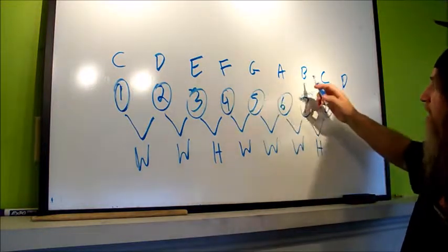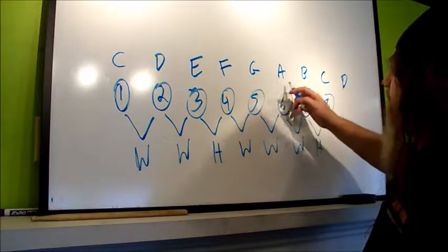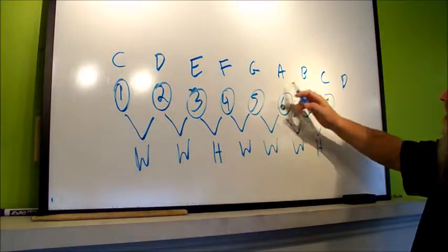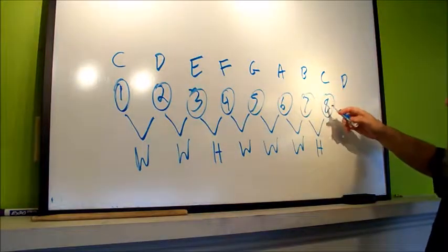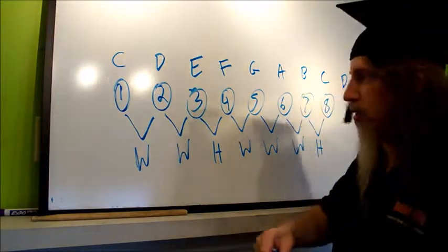Fifth mode, G, A, B, C, D, E, F, G. Sixth mode, A, B, C, D, E, F, G, A. Seventh mode, B, C, D, E, F, G, A, B. And we're back on C again. So those are the modes.